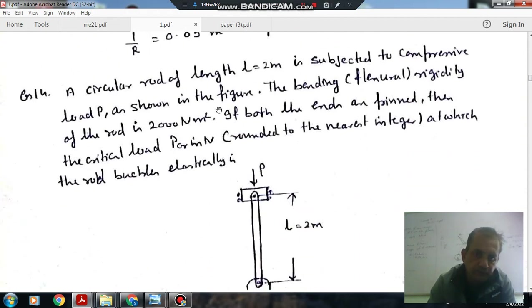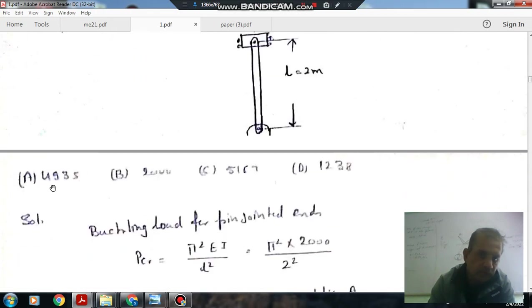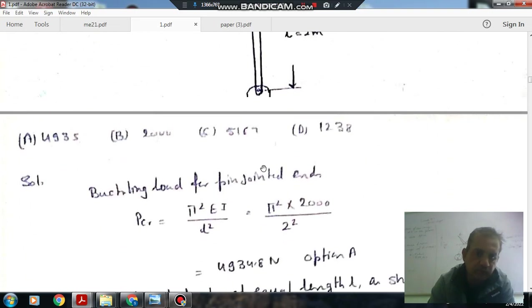Next, a circular rod of length L 2 meters is subjected to compressive load P as shown in the figure. The bending flexibility of the rod is 2000 Nm square. If both ends are pinned, then the critical load P in Newton at which the rod buckles is: option A is 4935, B 2000, C 5167, and D 1238.